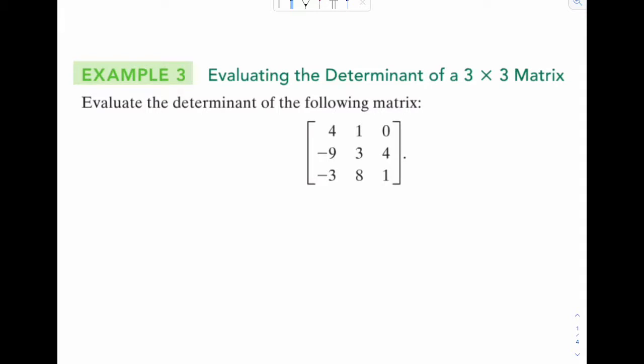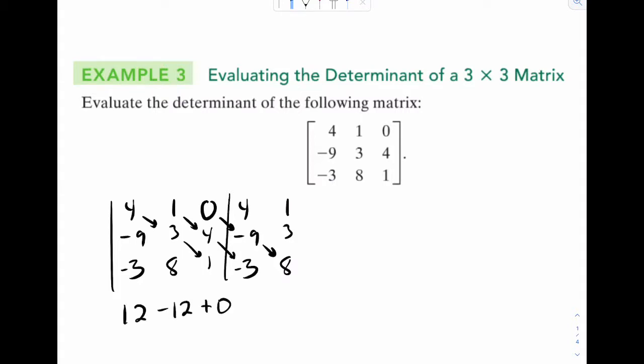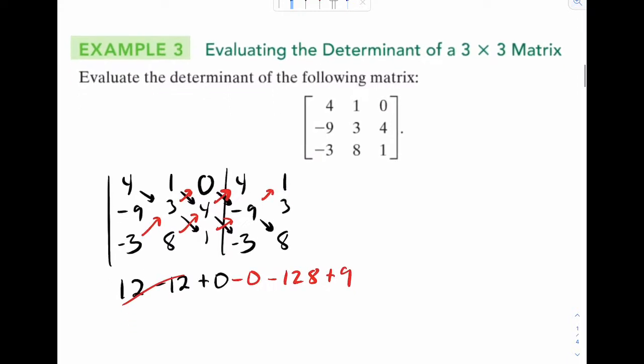Here's our next example. Find the determinant of this one. So hopefully you remember the technique I showed you. 4, negative 9, negative 3, 1, 3, 8, 0, 4, 1. We're simply going to grab the first two and then do the diagonals like so. So that's going to be 12 minus 12 plus 0 - so zeros are great, and every time you have a zero... that's going to be minus 0. Notice again these are going up so I'm going to put negative here. That would be 8 times, or 32 times 4 is 128. And then the last one - that's going to be minus negative 9, so plus 9. So these cancel, negative 128 plus 9 - negative 119 is our answer.